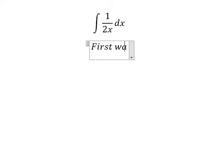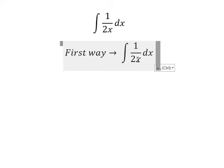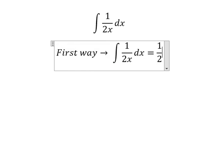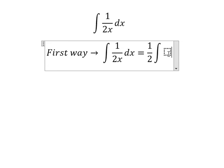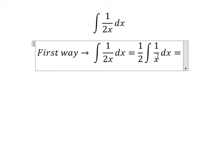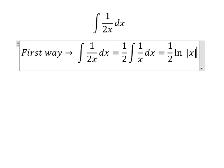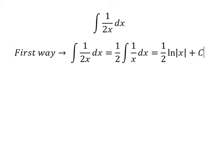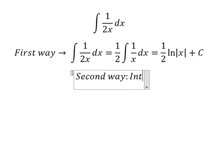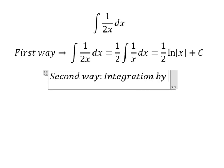In here, in this one I will put number 2 go outside, and we know that the integration of this one we have ln of the absolute value of x, and I will put C. And the second way we can answer this one, that is about integration by substitution.